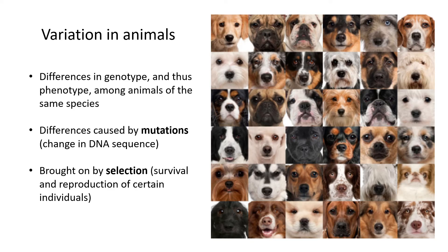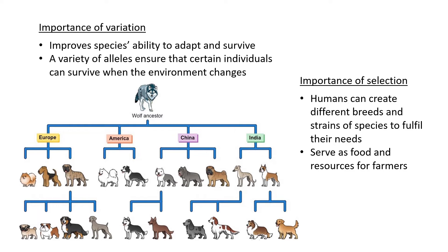So what is the importance of variation? Why is it so important to see so many different breeds in the dog example? Basically, it's there to improve the species' ability to adapt and survive. Animals and humans alike want their species to continue in their kids and grandkids. So the alleles and genes have to survive so that they can be passed on, and the species can continue.